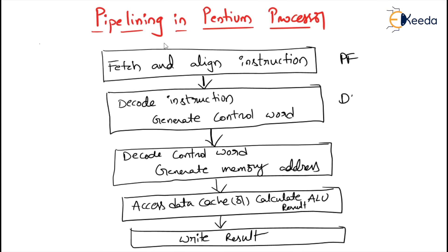Next is the first decode stage — we can call it D1. In the D1 stage, the CPU decodes the instruction to generate a control word. A single control word executes instructions directly; more complex instructions require a microcoded control sequence in the D1 stage.